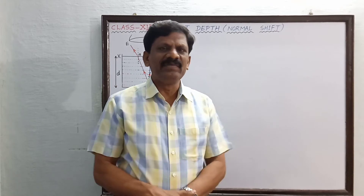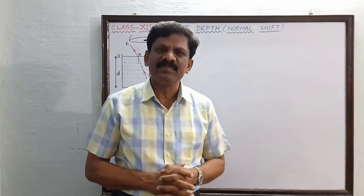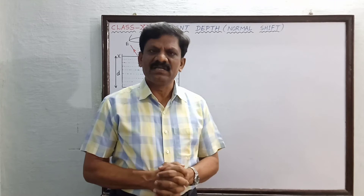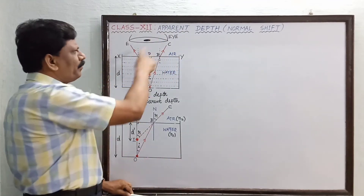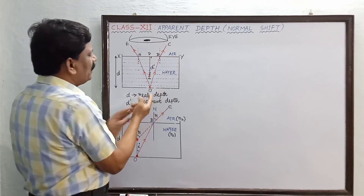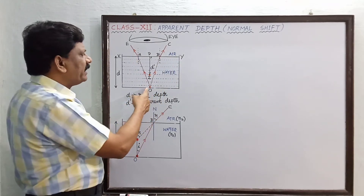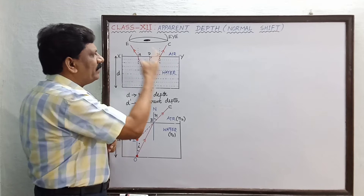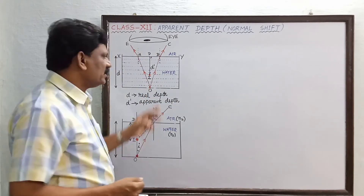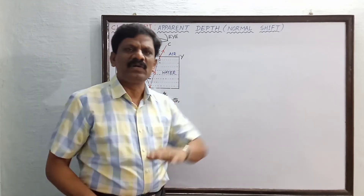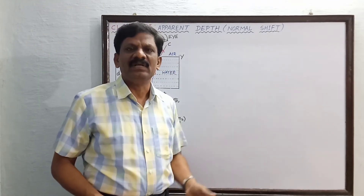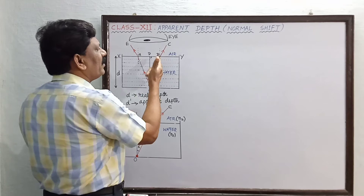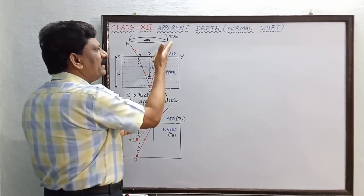Before deriving, note that d' must be smaller than the real depth d. Now, a light ray travels from point object O up to point B on the surface of the water, traveling straight along path OB. When it enters the air (rarer medium), it bends away from the normal.